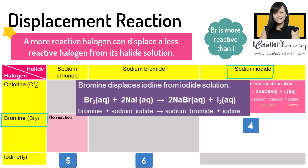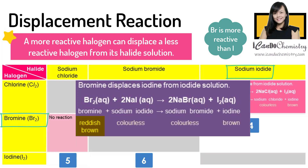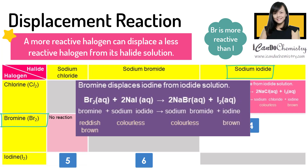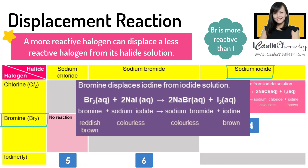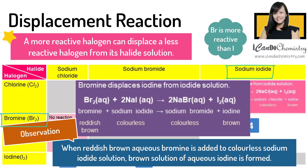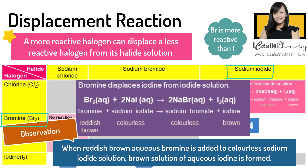For the observation, aqueous bromine is reddish brown, halide solutions are colourless, and aqueous iodine is brown. Hence in this reaction, when reddish brown aqueous bromine is added to colourless sodium iodide solution, a brown solution of aqueous iodine is formed.